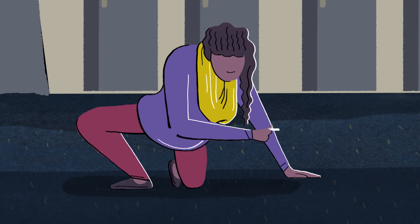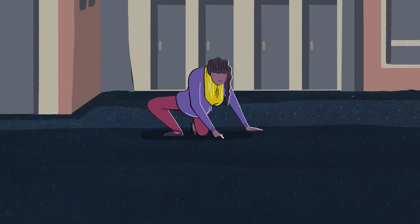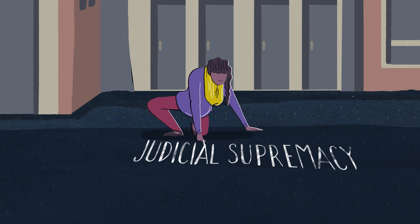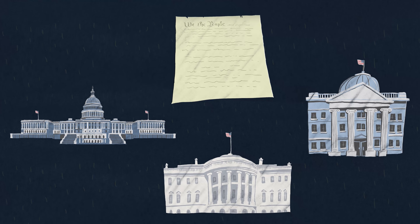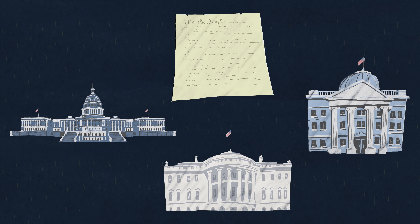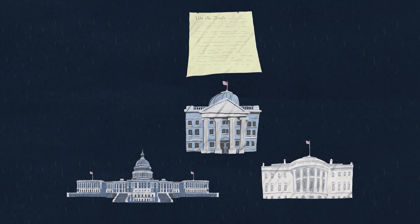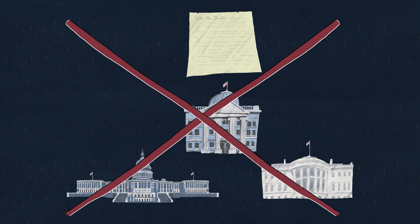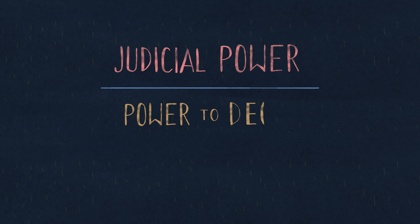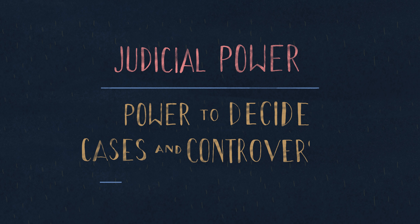Marbury has sometimes been used to justify what's called judicial supremacy — the idea that the Supreme Court is somehow above all the other branches of government when it interprets the Constitution. When in fact what the judicial power is is the power to decide cases and controversies that come before the court.